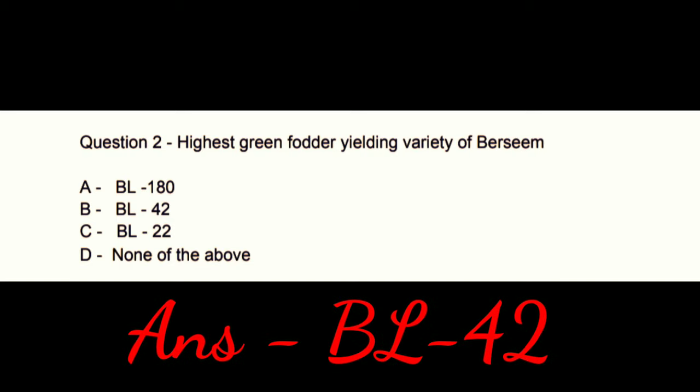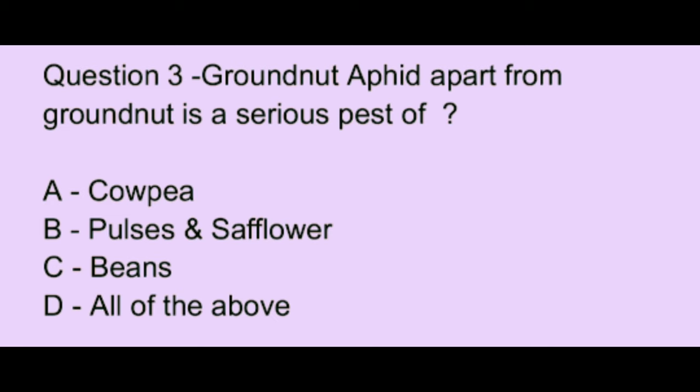Question number 3. Groundnut aphid, apart from groundnut, is a serious pest of: Option A: cowpea. Option B: pulses and safflower. Option C: beans. Option D: all of the above. The correct answer is option D, which is all of the above.